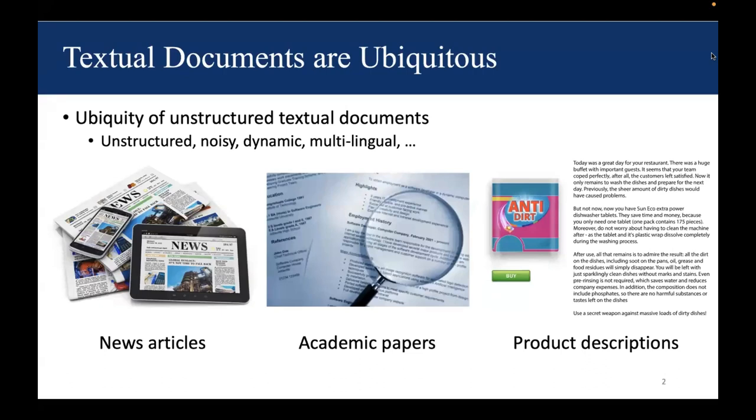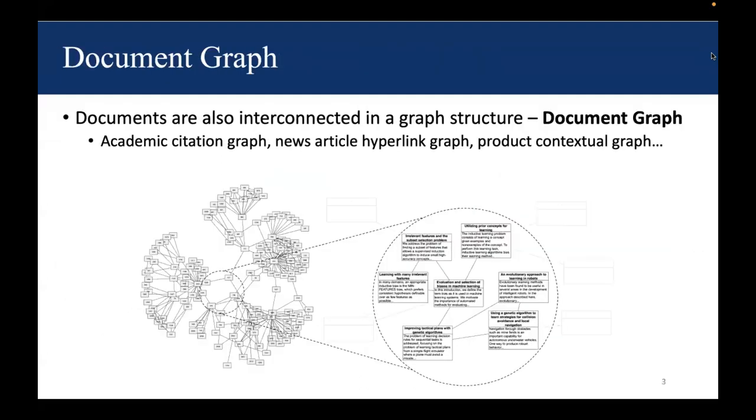Actual documents are ubiquitous, such as news articles, academic papers, and product descriptions. We discover that documents are usually connected in a graph structure. We call such data document graph.